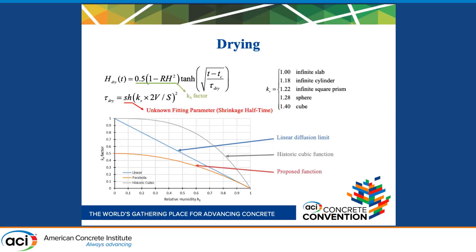Drying shrinkage depends on diffusion, so it must meet the requirements of diffusion theory. The hyperbolic tangent in this pore relative humidity equation is used to satisfy all three requirements, and it was adopted from the B4 model, which is another creep and shrinkage model that has been established in the engineering field.